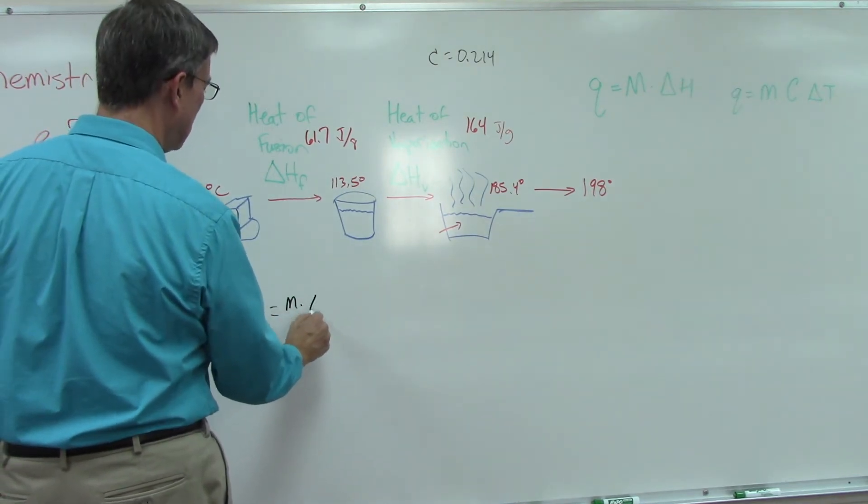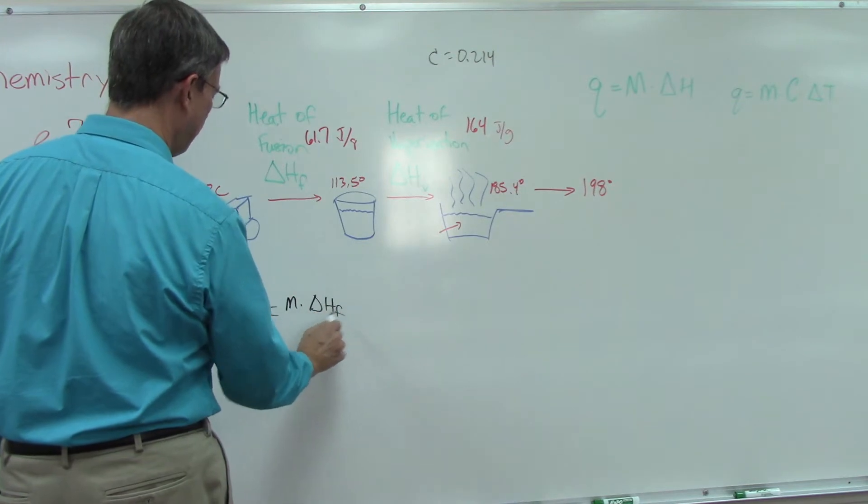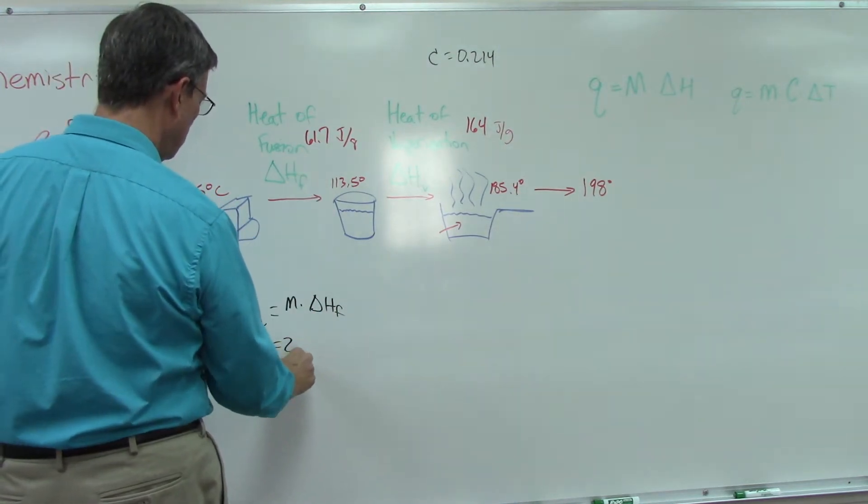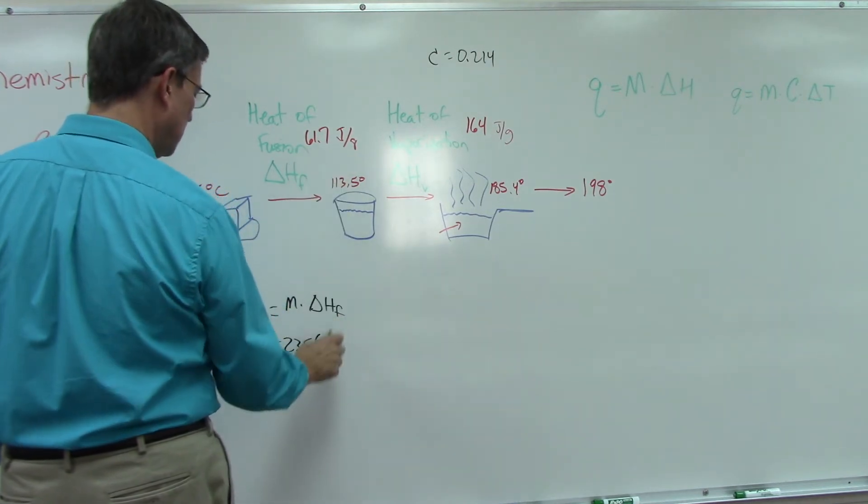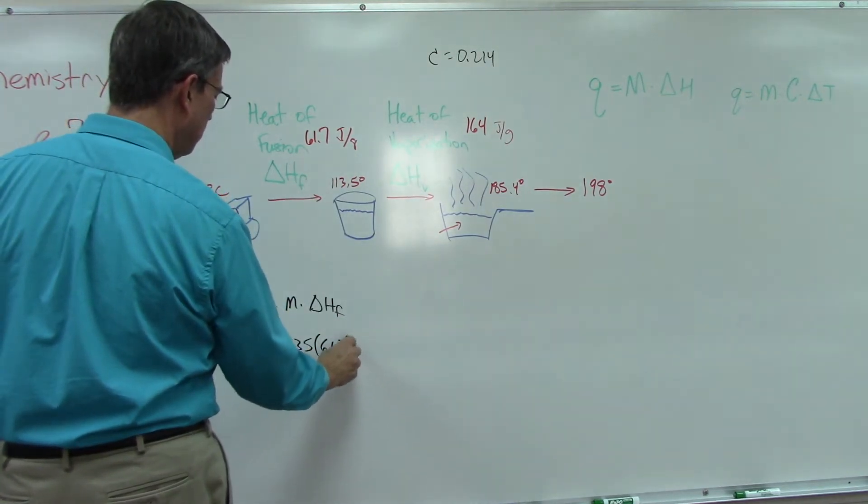Let's call it Q2. That's going to be the mass times the delta H F for this one. So 235, the heat of fusion was 61.7.